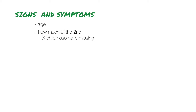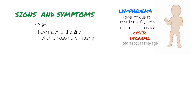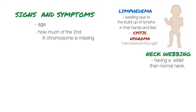Signs and symptoms of Turner's Syndrome vary depending on the age of the person and on how much of the second X chromosome is missing. Infants may be born with lymphedema, or swelling due to the buildup of lymph in their hands and feet. Many also have lymph-related swelling of the back of the neck, causing a cystic hygroma which eventually decreases with age, often leaving extra skin called neck webbing, giving the appearance of a wider than normal neck.